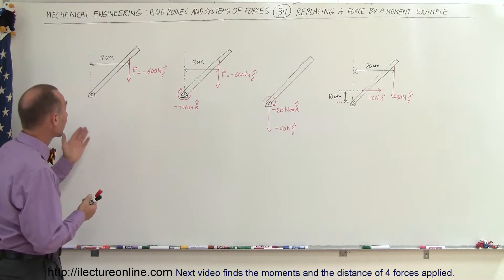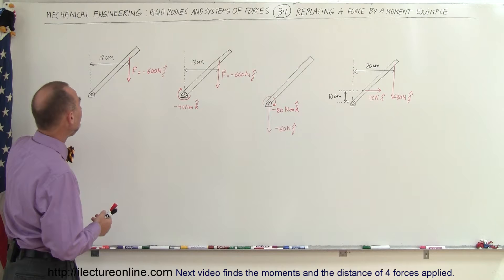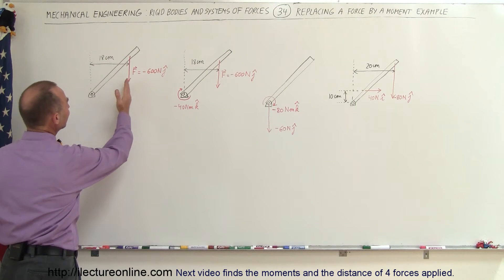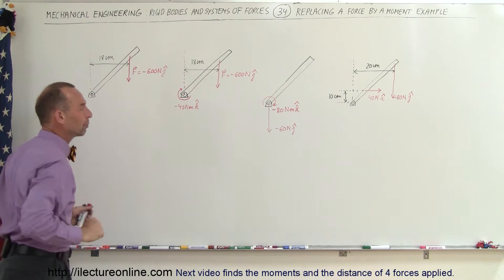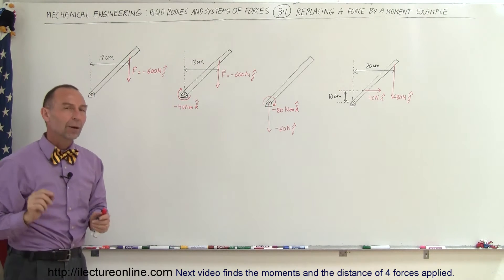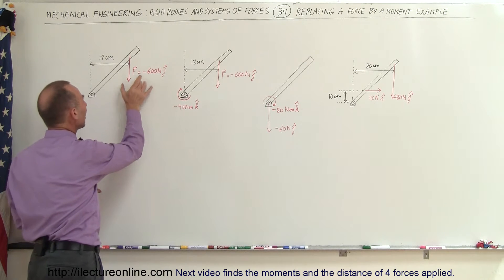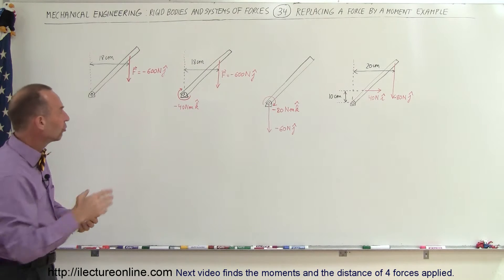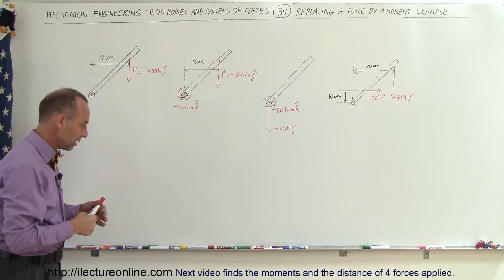Here we have a beam which can rotate about this pivot point. There's a force pulling down on the beam at a distance of 18 centimeters away from the vertical line of action going through the pivot point. What we want to do is replace this force with a force at the pivot point and a moment to compensate for the torque caused by this force.